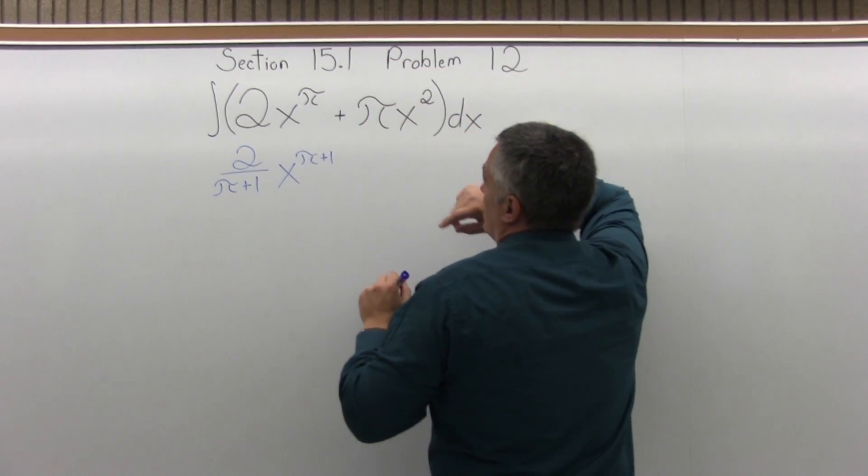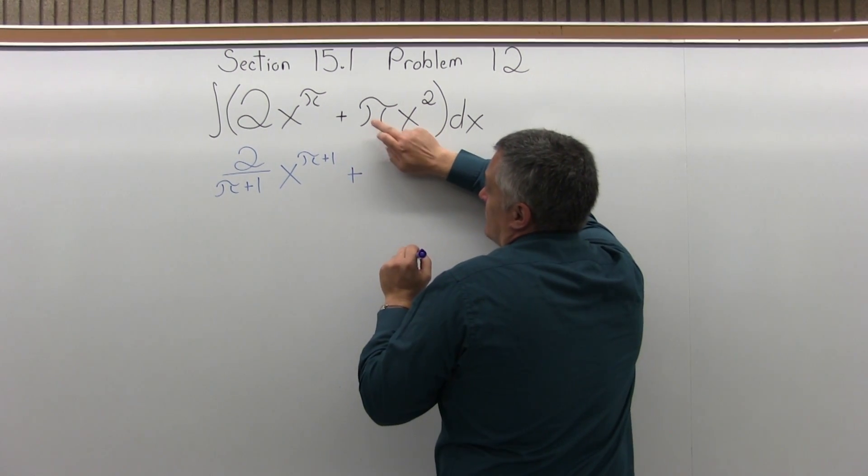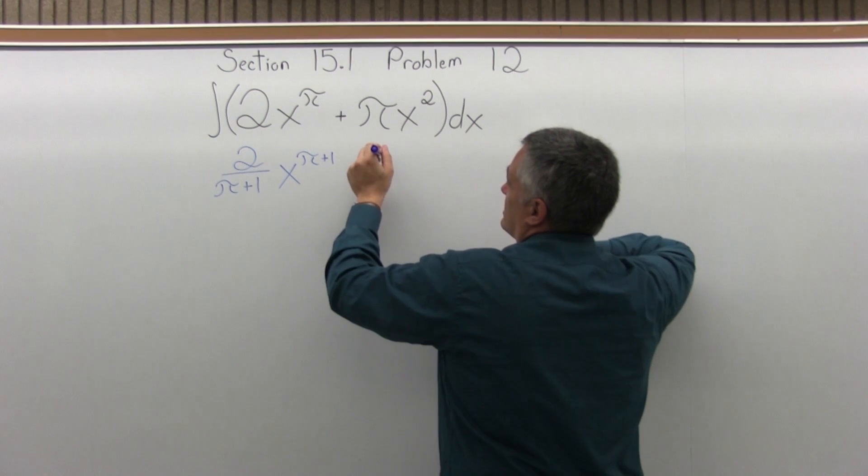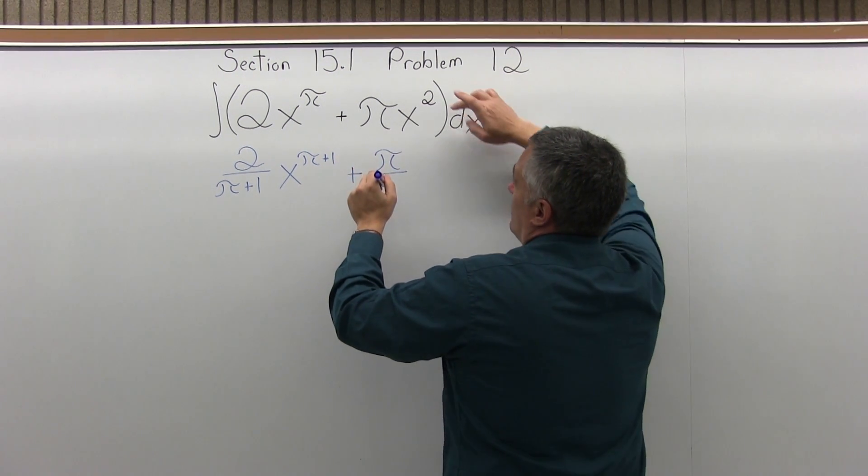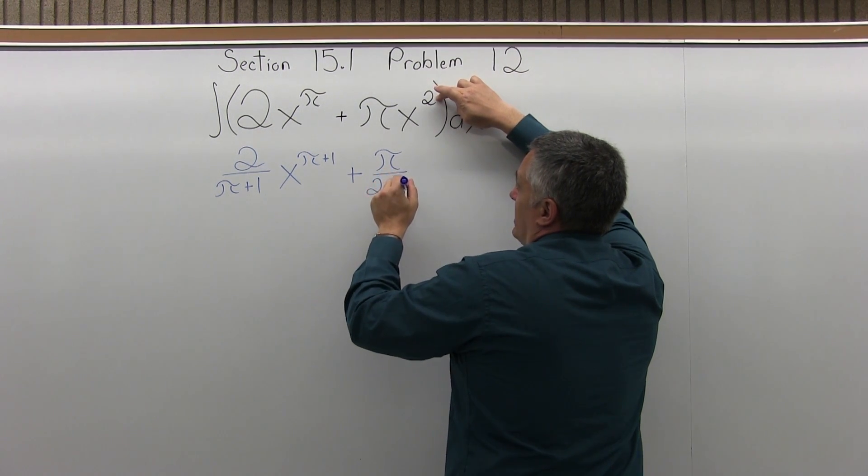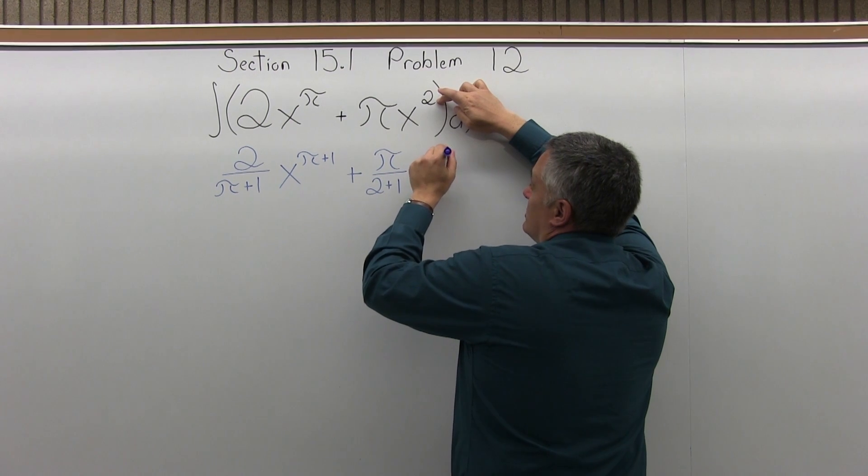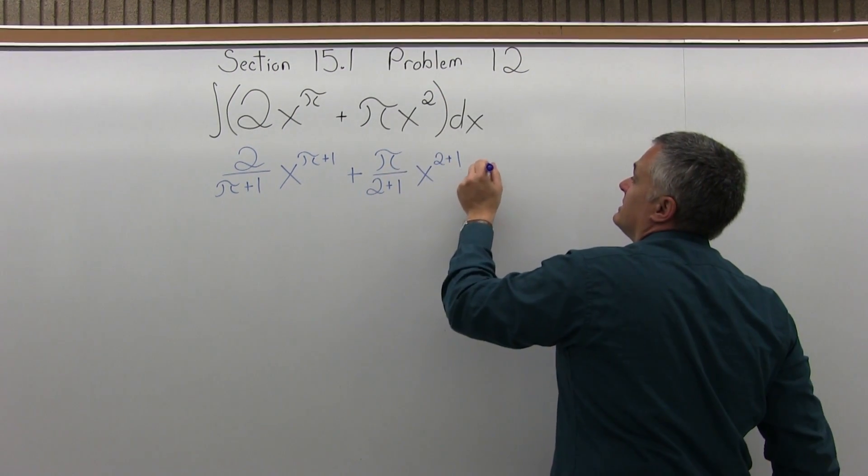And now this one, this pi x to the second, well again, pi is just the number, so it's going to go in the numerator of the fraction over the previous exponent plus 1, x to the previous exponent plus 1, so 2 plus 1, plus some type of a constant.